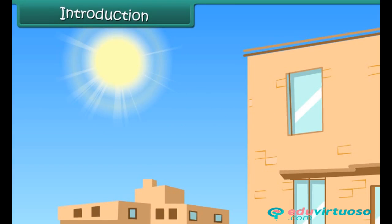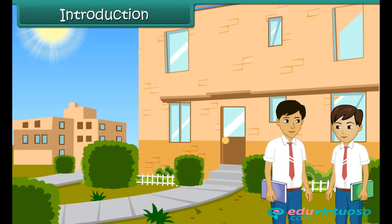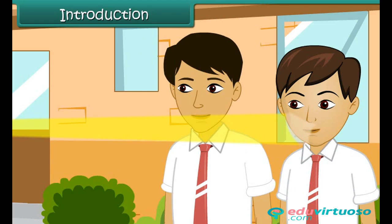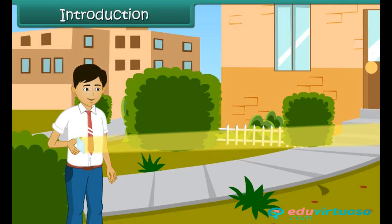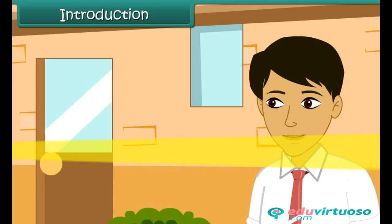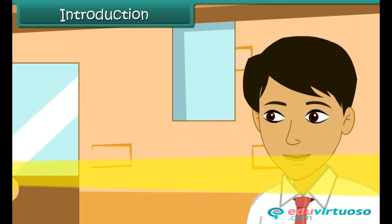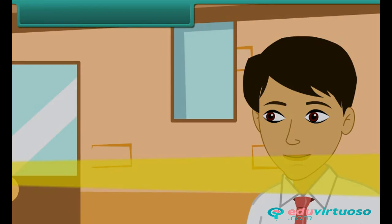It is recess time at school. You and your friends are out in the lawns when suddenly a bright light hits you in the eye. You move to a different location, but this time the bright light hits your friend. The bright light seems to be following you. You look around and see Aman standing at a distance with a mirror in his hand. You know Aman was responsible for this mischief, but you are not sure how he managed it. In this lesson we will discuss light, shadows, and reflection in detail.